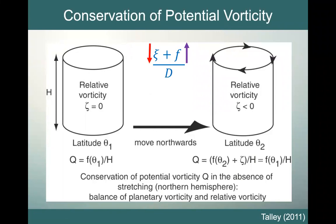How do we get zeta to go down when it started at zero? Well, it must now be negative. Take out your right hands, put your thumb down, and look at the direction your fingers are curling — they should be going in the clockwise direction. So we end up with a negative relative vorticity, or a clockwise spinning of our water column.